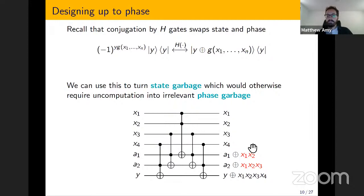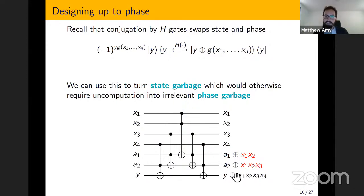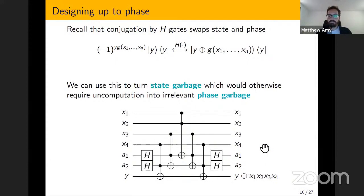One of the techniques we have at our disposal is the fact that conjugation by Hadamard gates swaps the state and phase. For example, if we have a circuit that computes a phase of (−1)^(Y · G(x1,...,xN)), we can just conjugate this with Hadamards on the target Y to instead put the computation into the state space, giving Y XOR G(x1,...,xN). We can use this in the opposite direction too: if we have state garbage that we would normally want to uncompute, we can push this into phase garbage — a relative phase. For the Barenco-style four-control Toffoli gate, if we look at the first five Toffoli gates, we've actually computed exactly the function we want. The other three Toffoli gates are just uncomputing the state garbage.